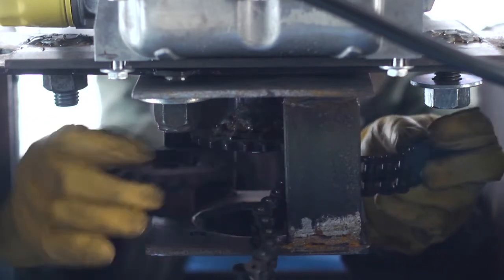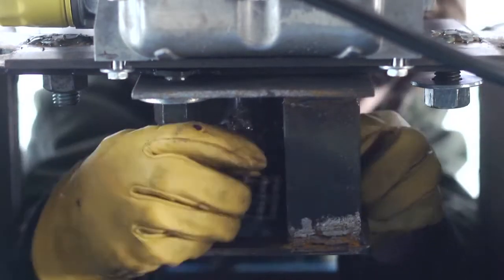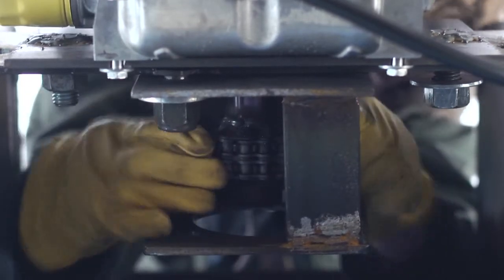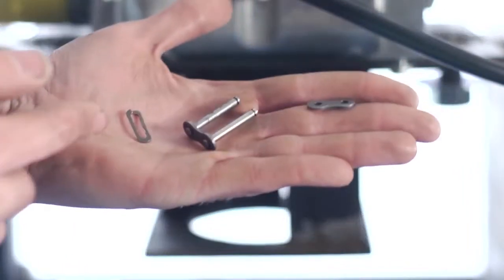Now, attach the engine coupler to the pump coupler using the double chain coupler. This must be fitted around the sprockets of both couplers and secured with the master link.